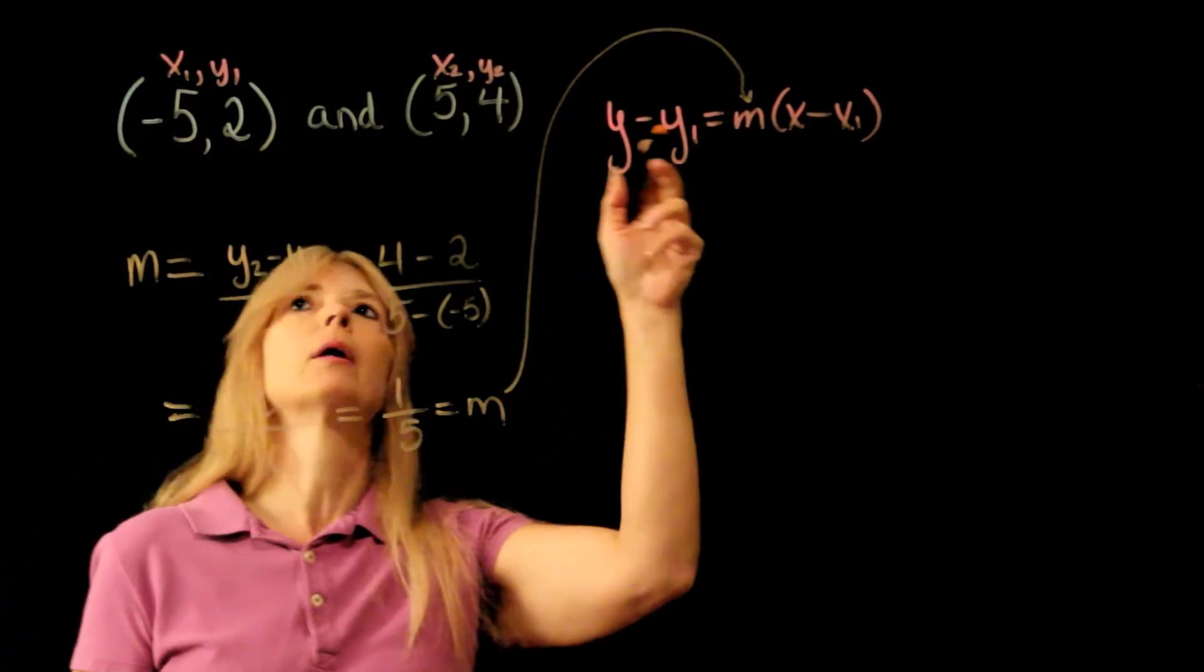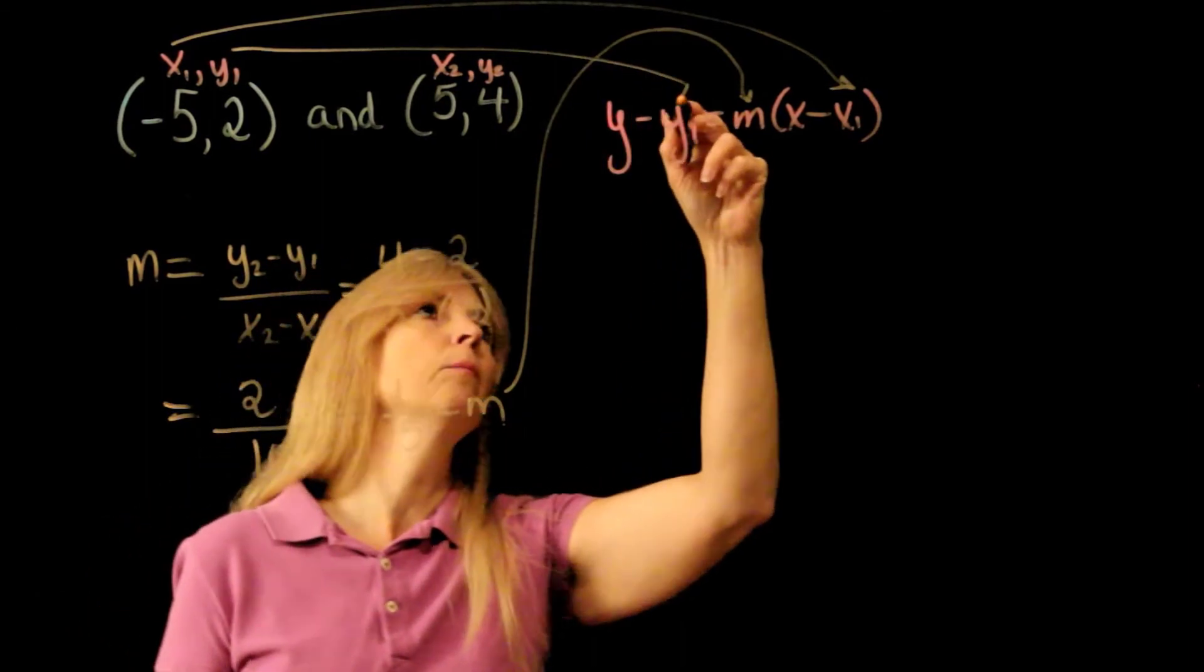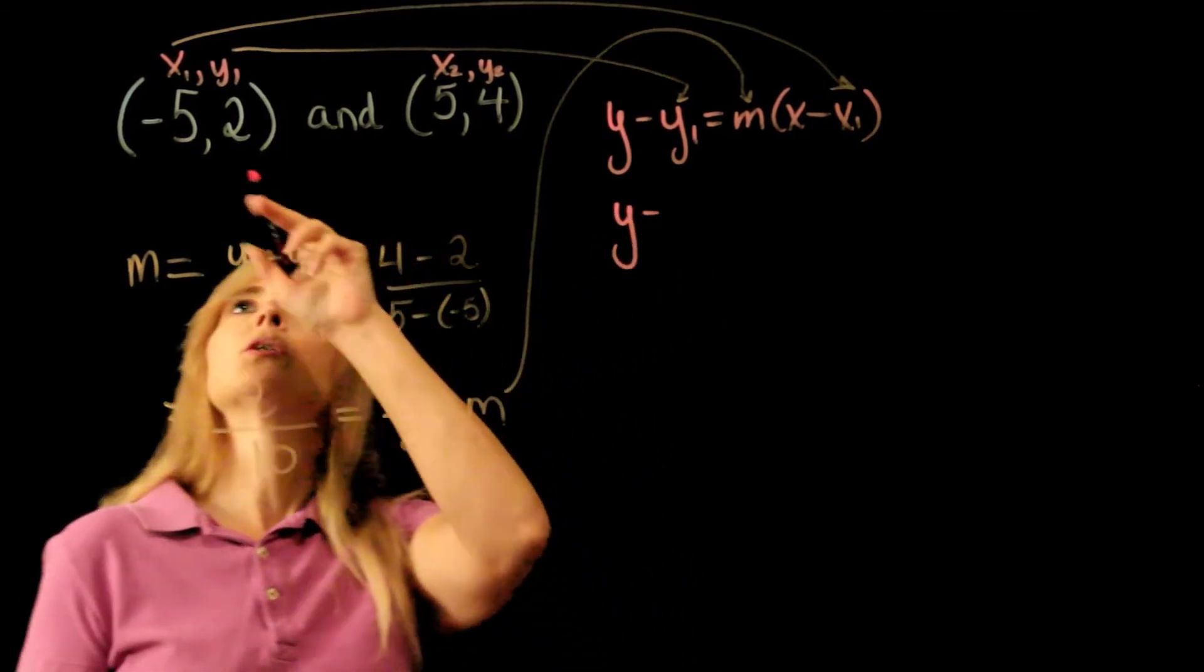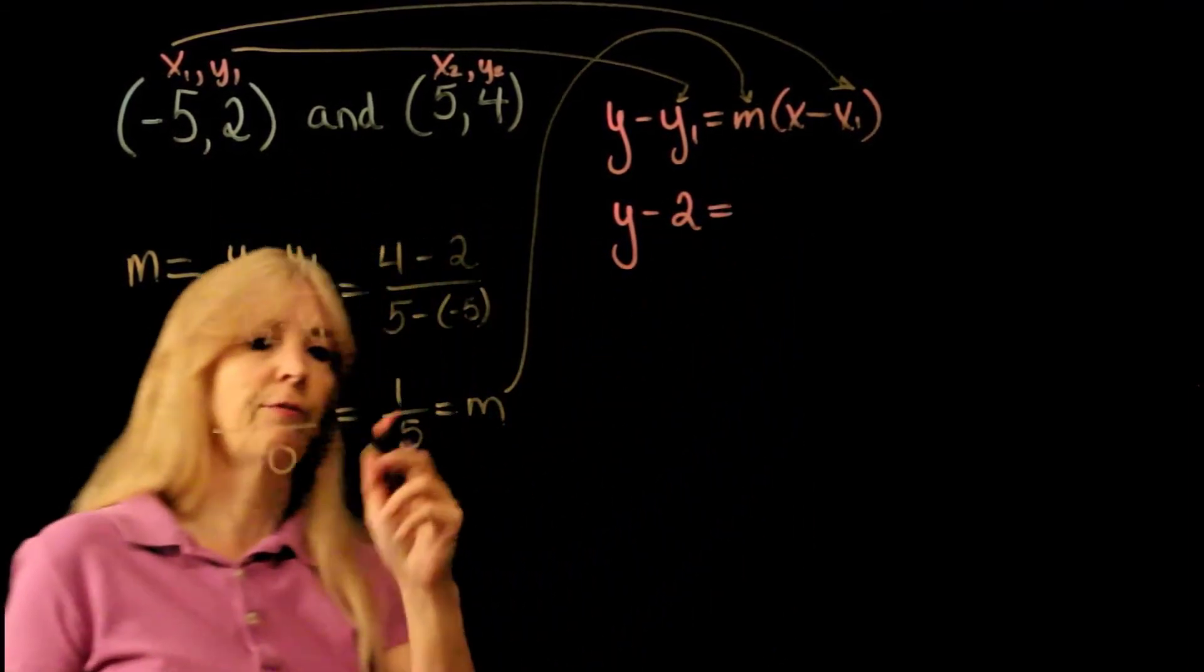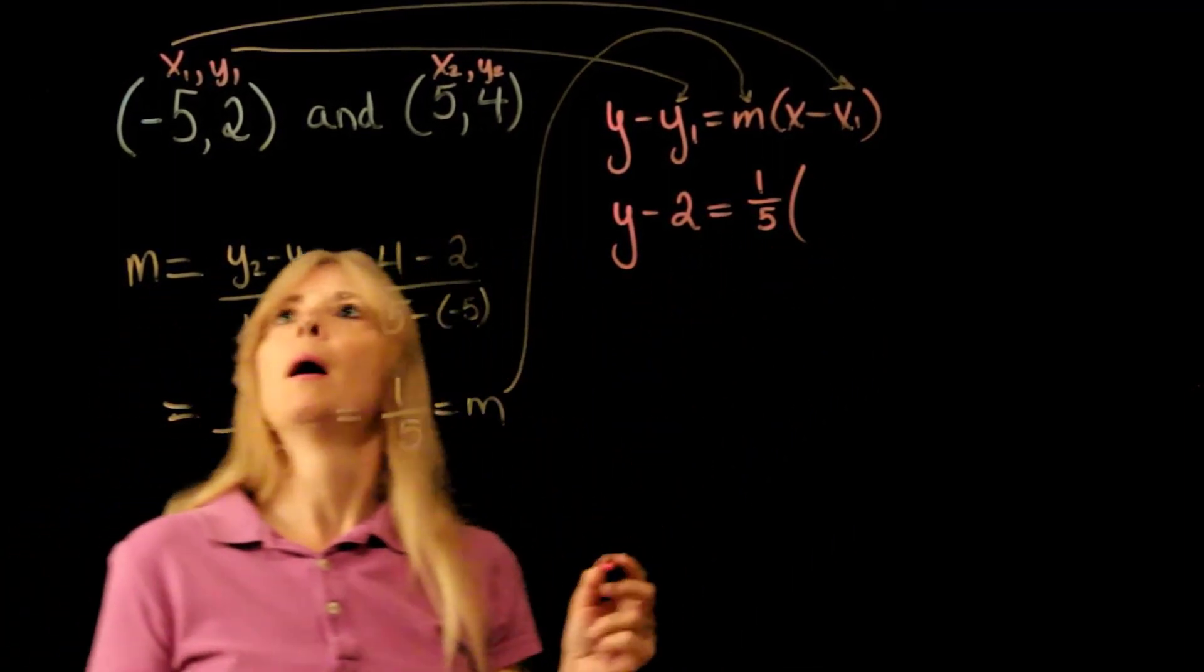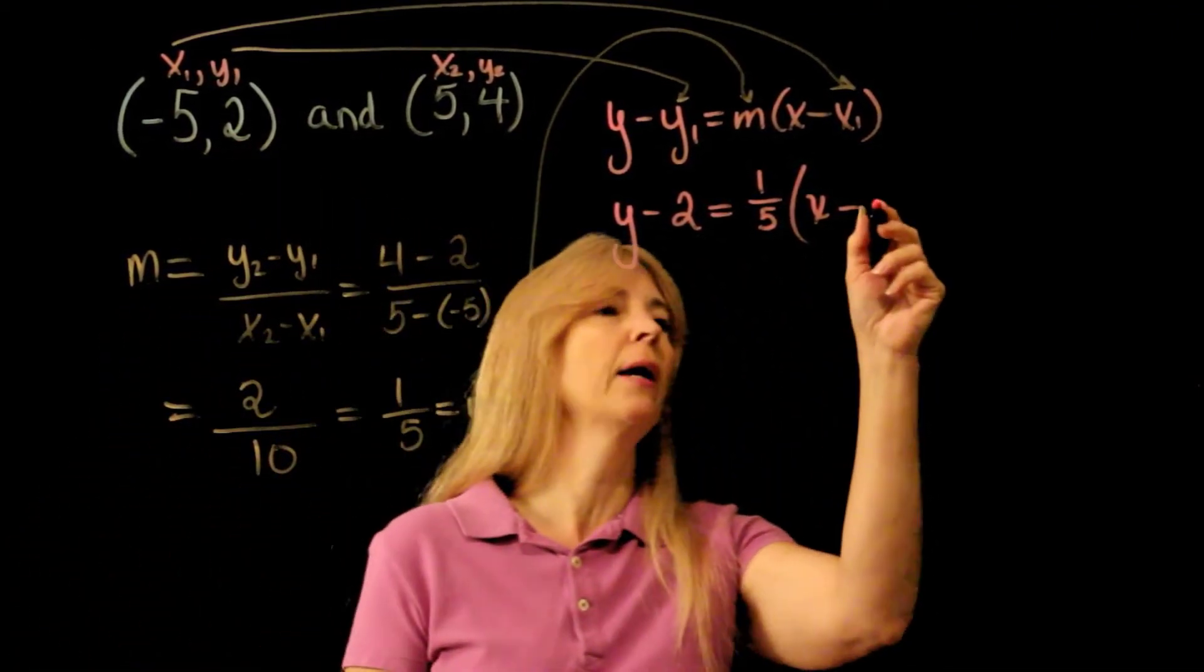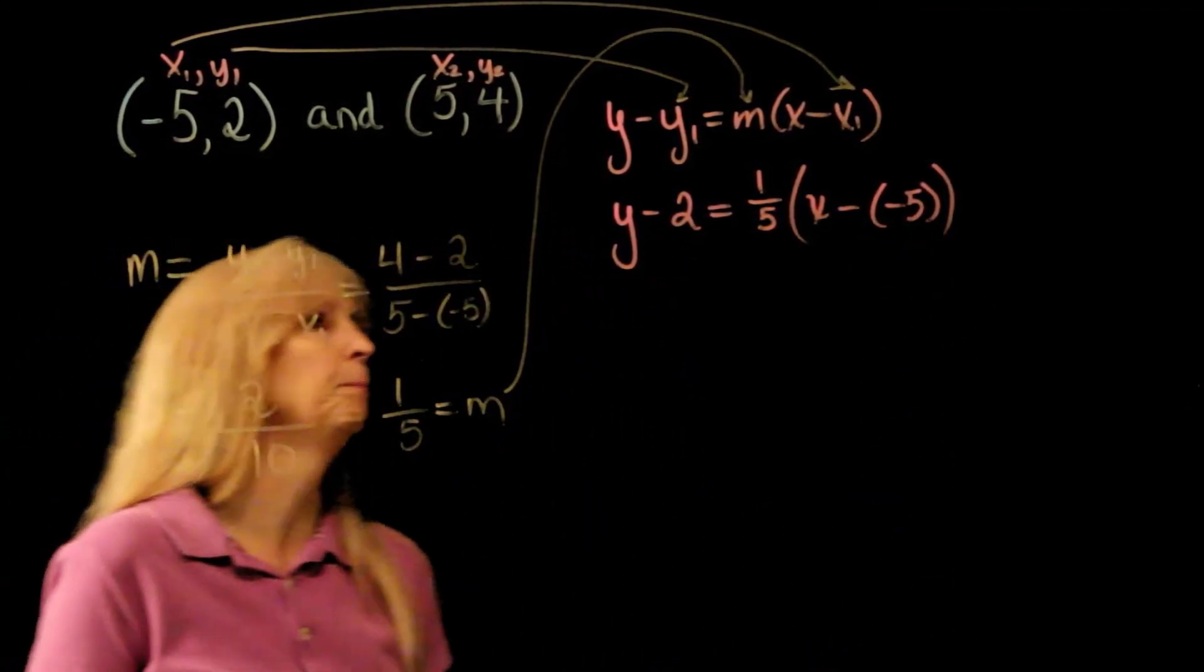I can plug in my x1 and my y1 to get my equation. So y minus 2 equals my slope 1 fifth times x minus x1, which is negative 5. Be careful with those negative signs, you don't want to lose them.